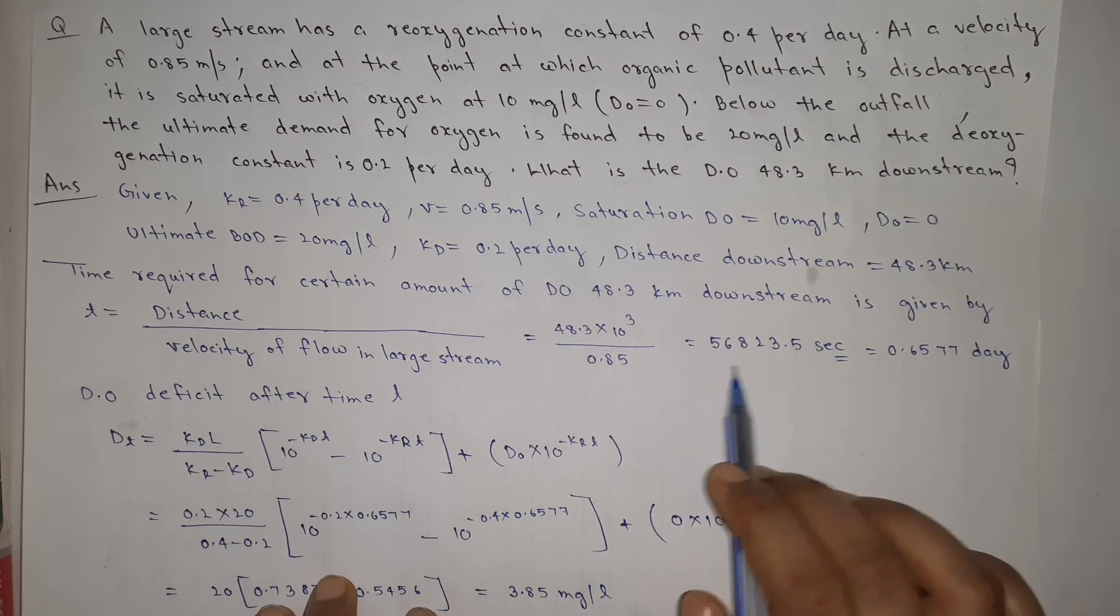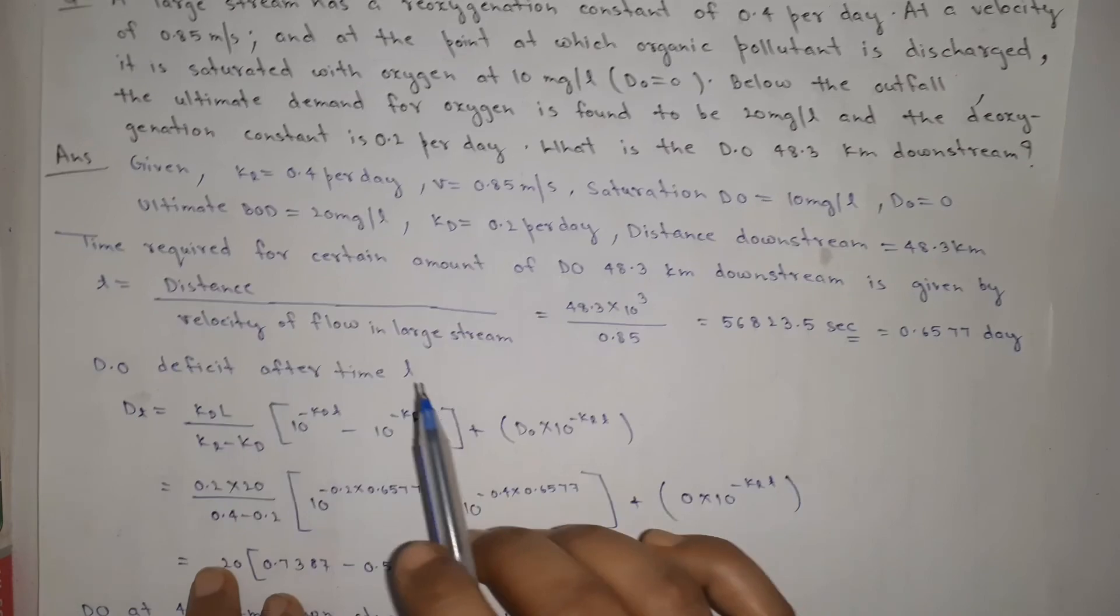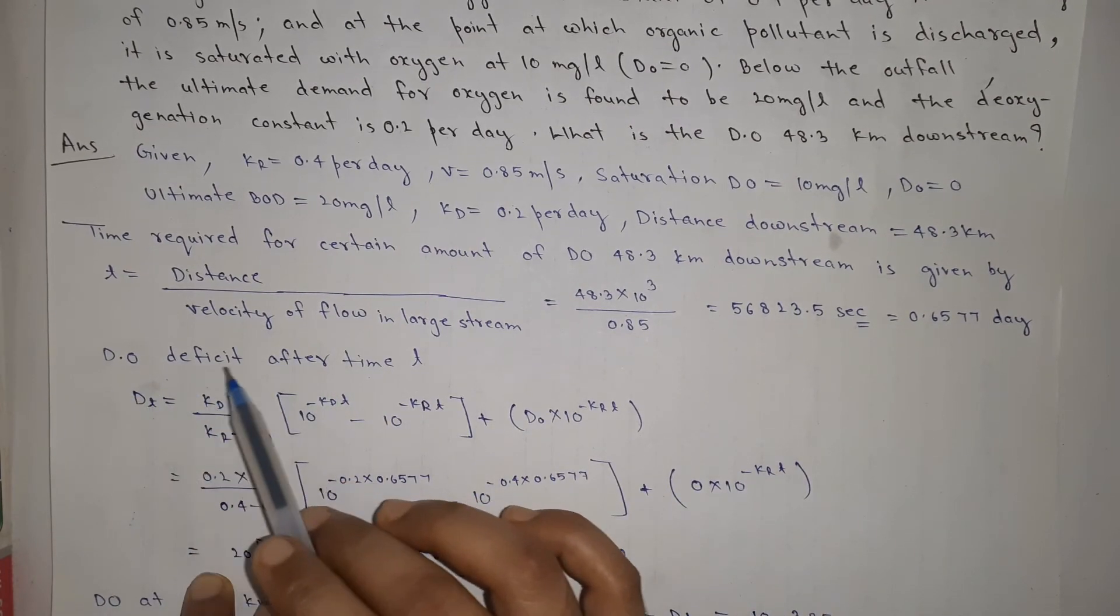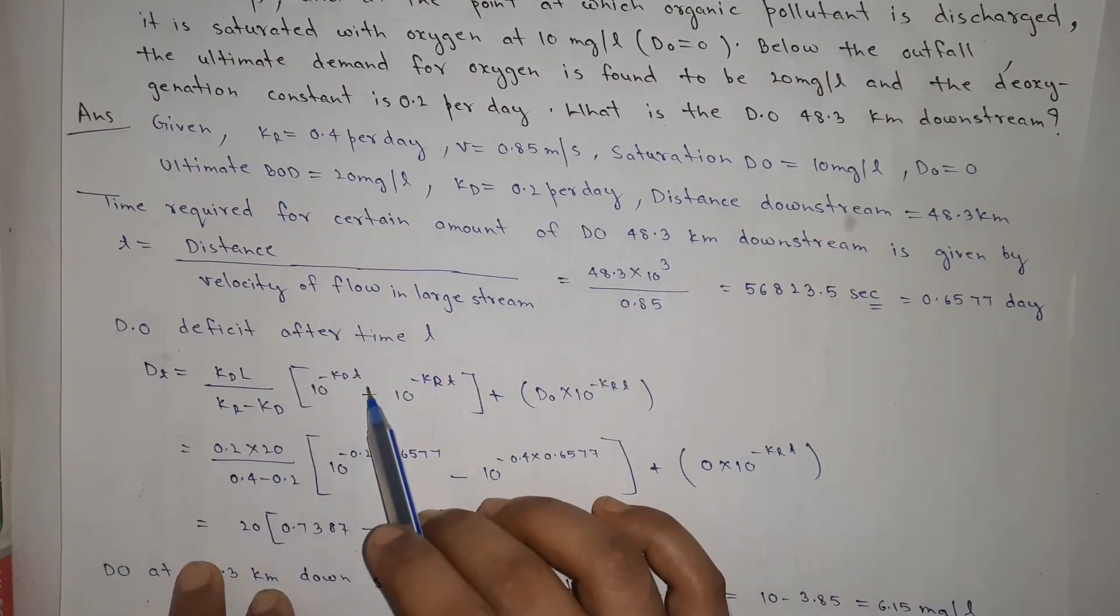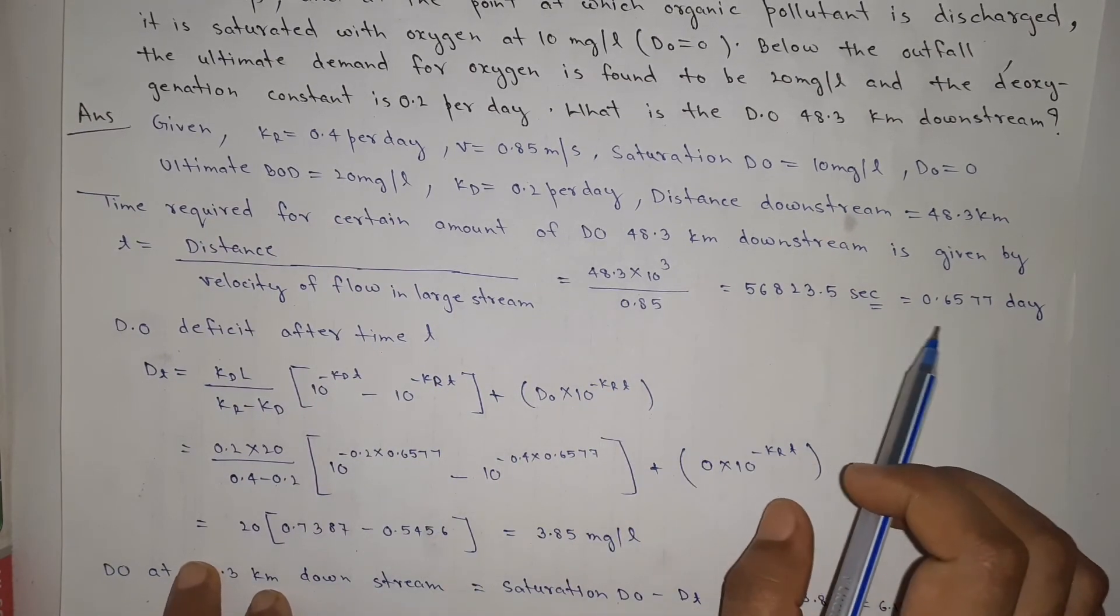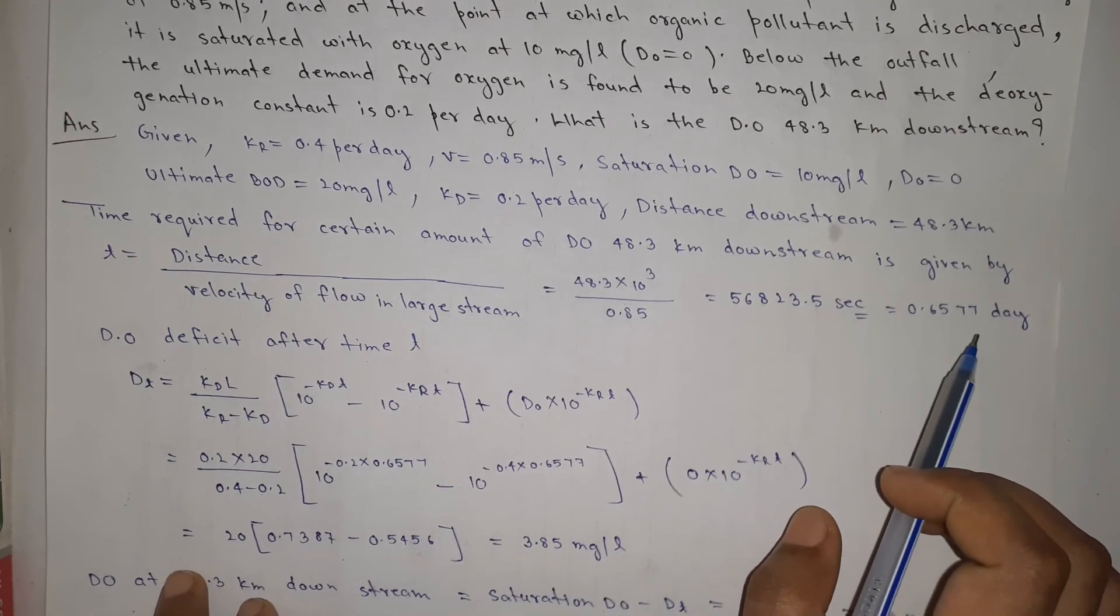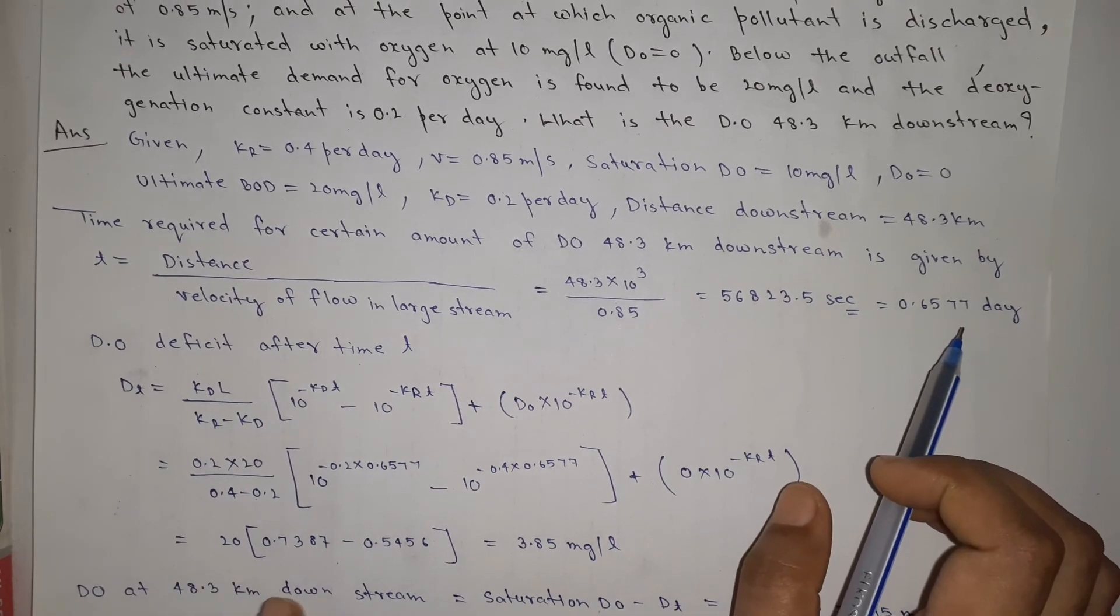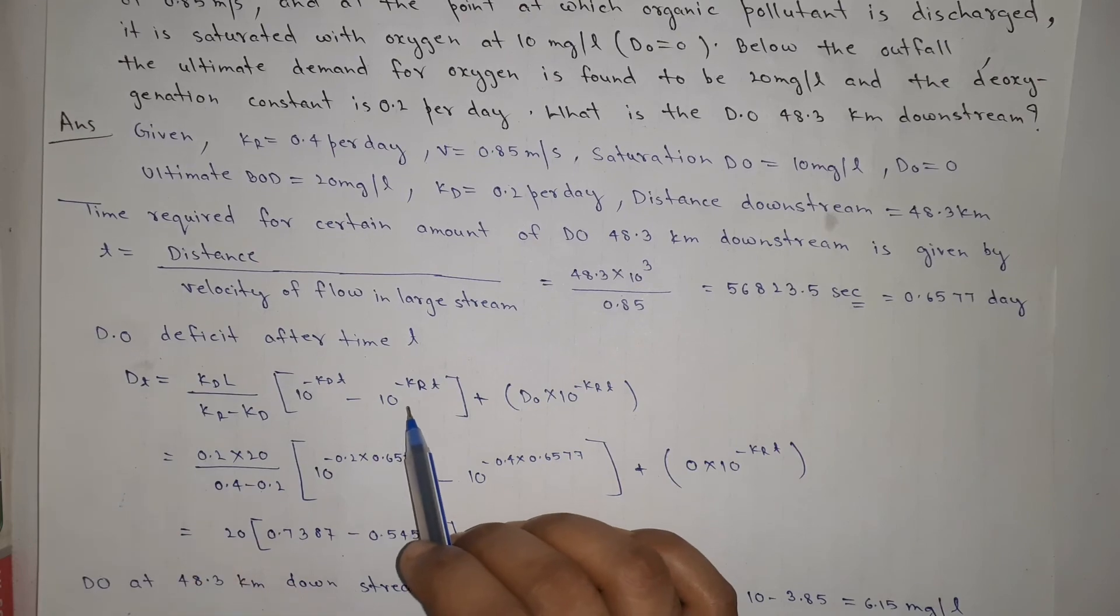We will convert it in days by dividing by 24 into 60 into 60. We get 0.6577 days. After this amount of time, we need to find the oxygen deficit, so we will use the Streeter-Phelps equation.